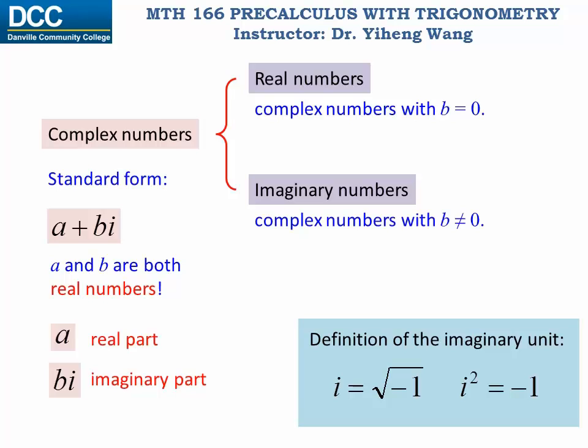And if the imaginary number does not have a real part — in other words, a is zero — then it is known as a pure imaginary number.